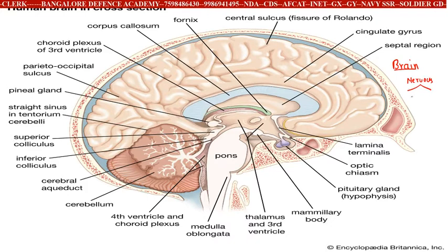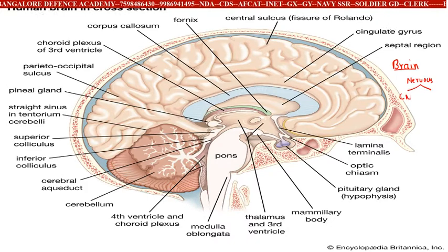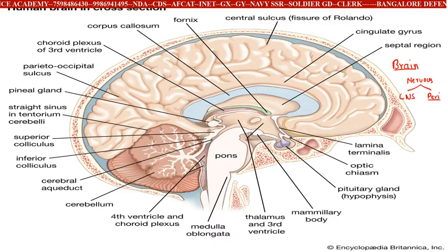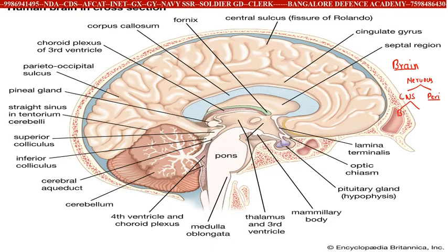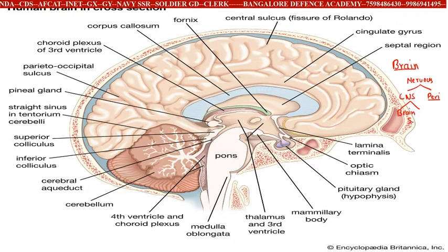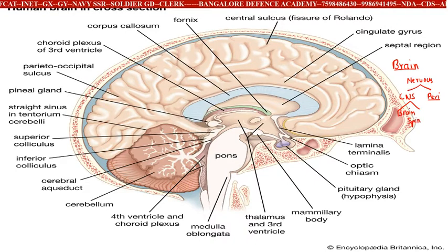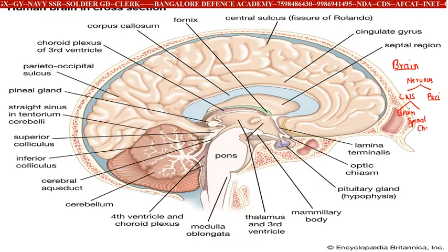The nervous system is divided into the central nervous system and the peripheral nervous system. The central nervous system consists of the brain and spinal cord.